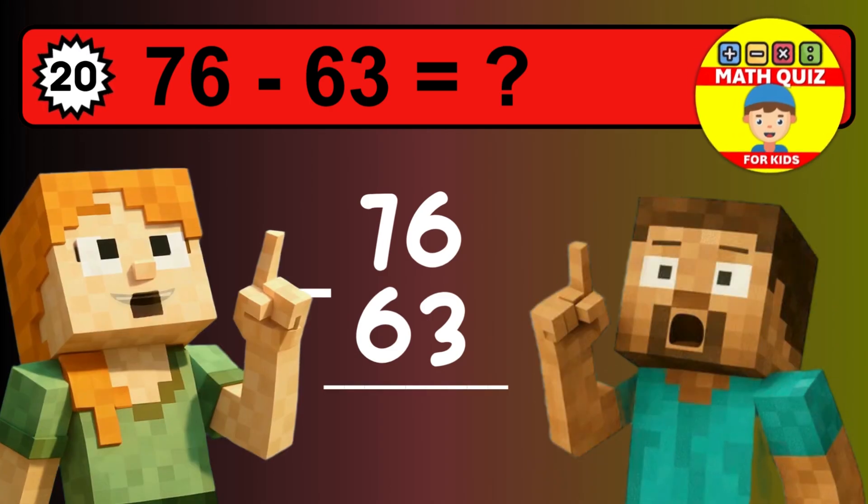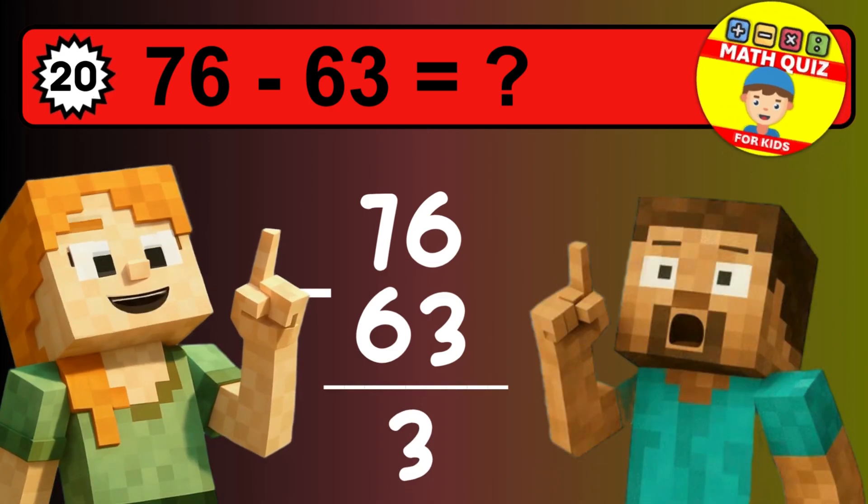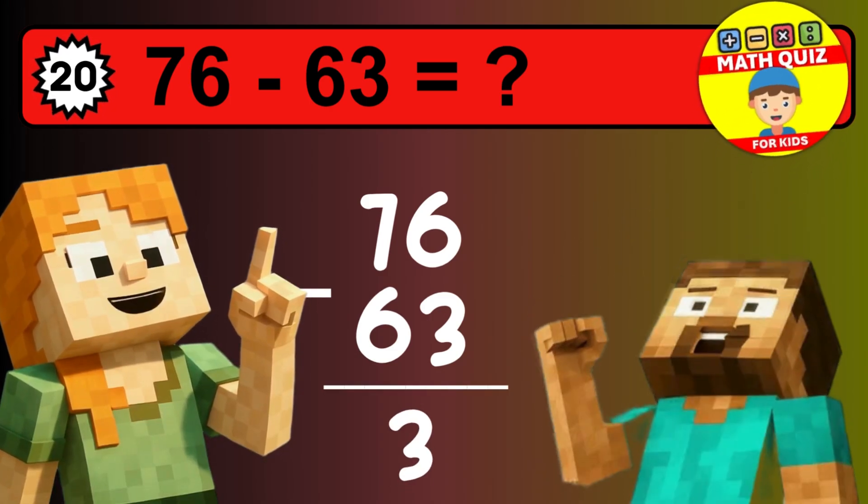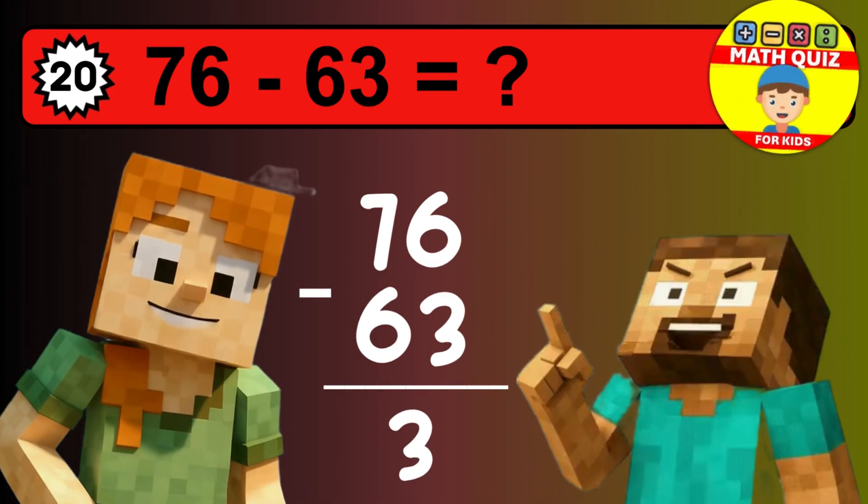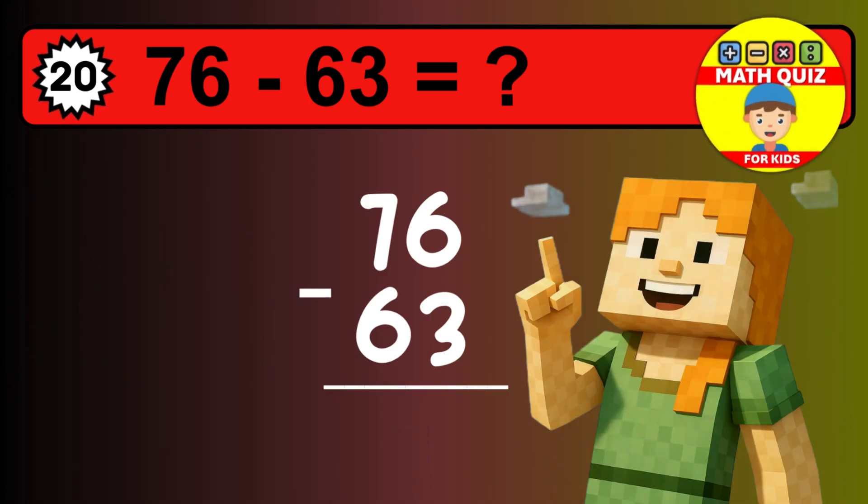We start with the units: 6 minus 3 is 3. Then we go to the tens: 7 minus 6 is 1. The final answer is 13.